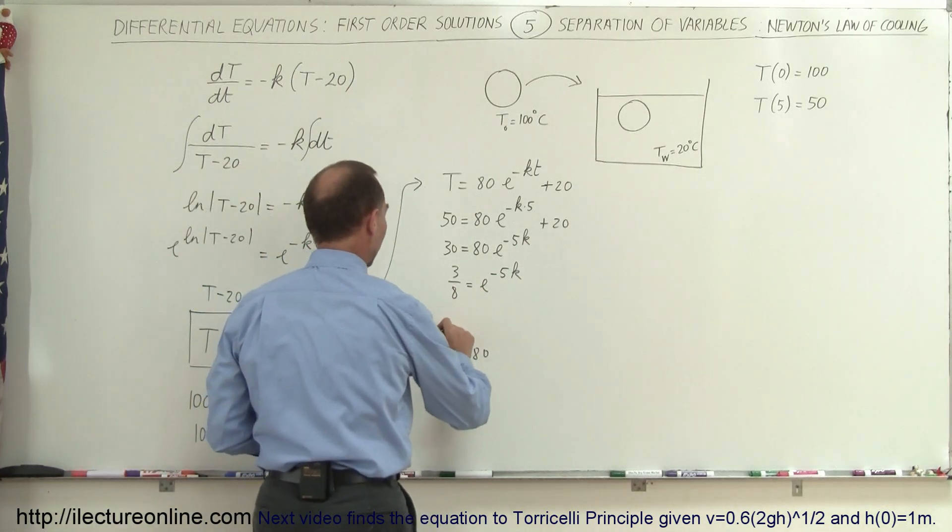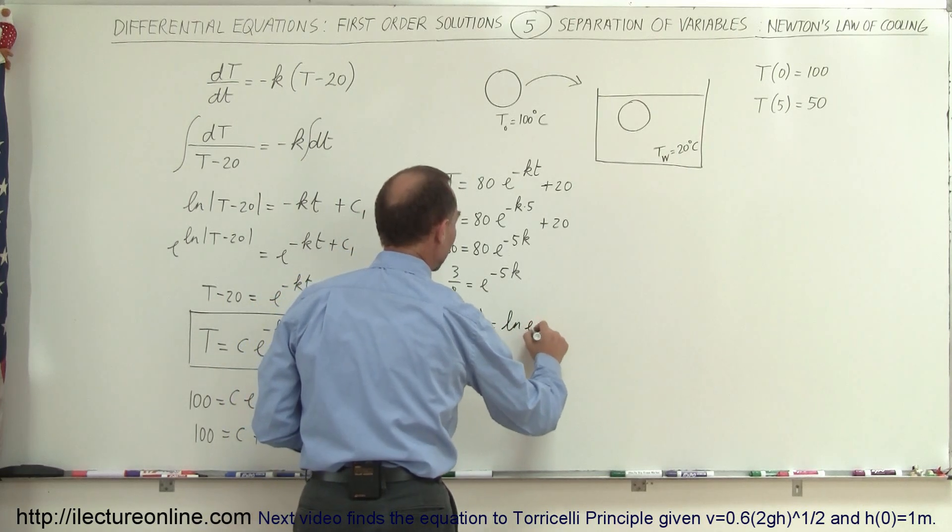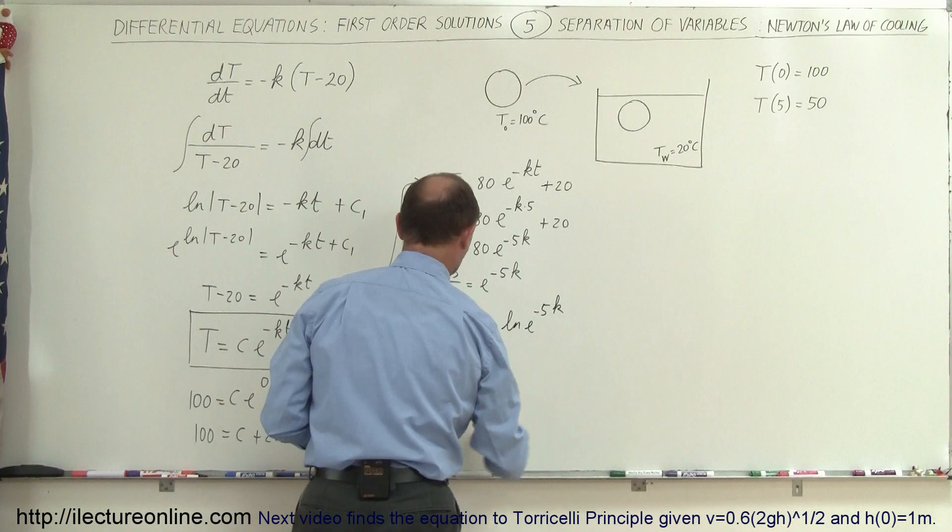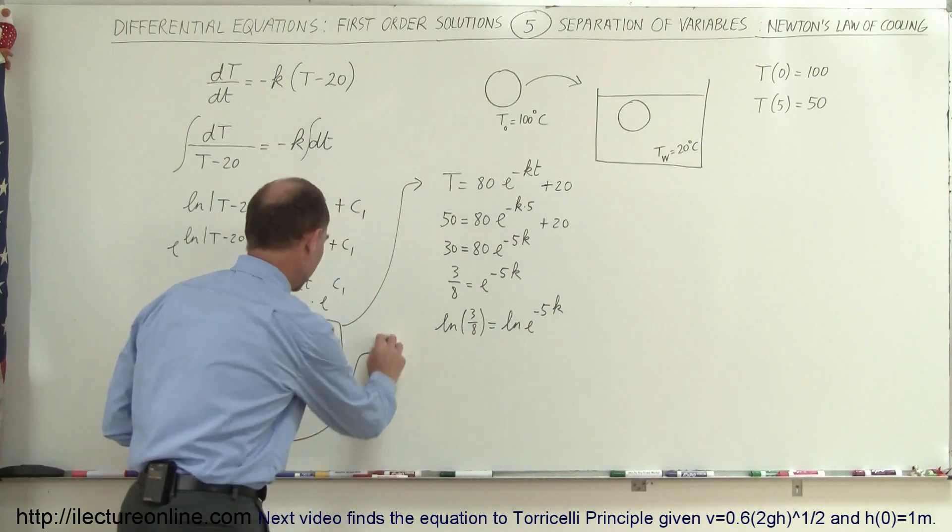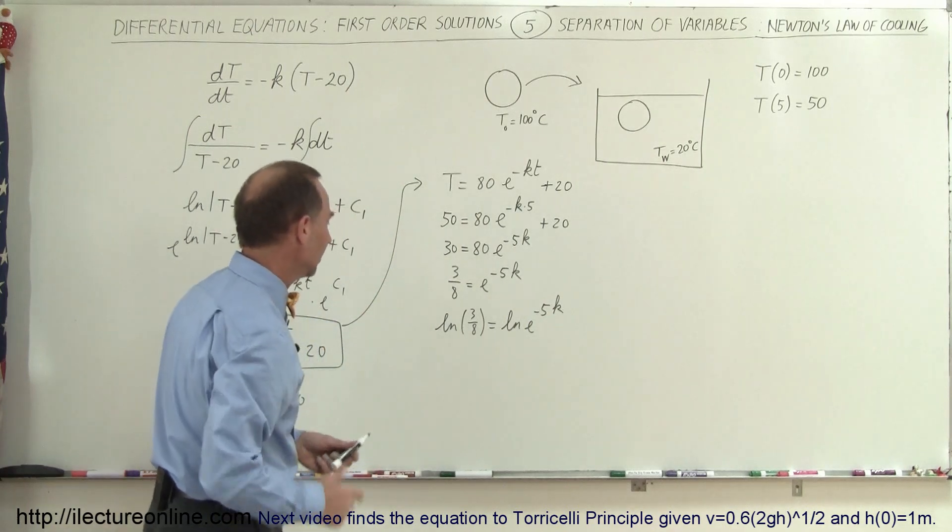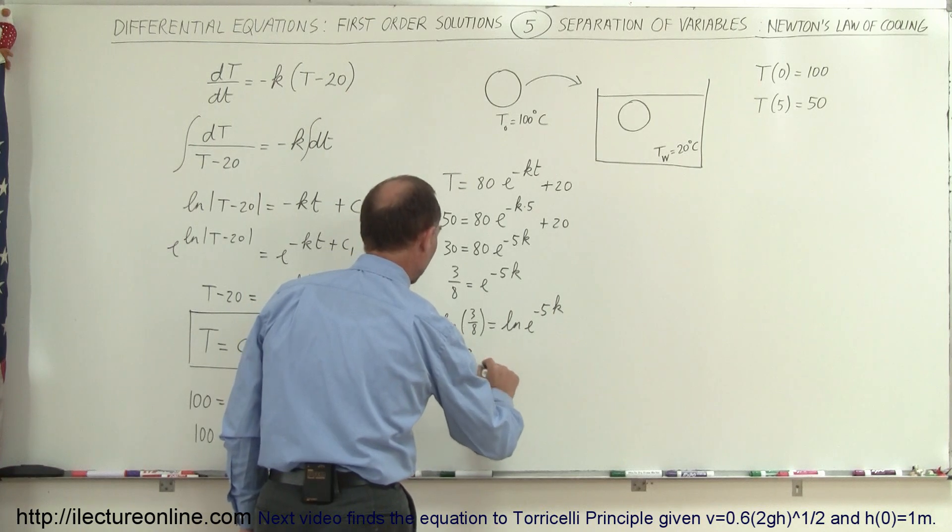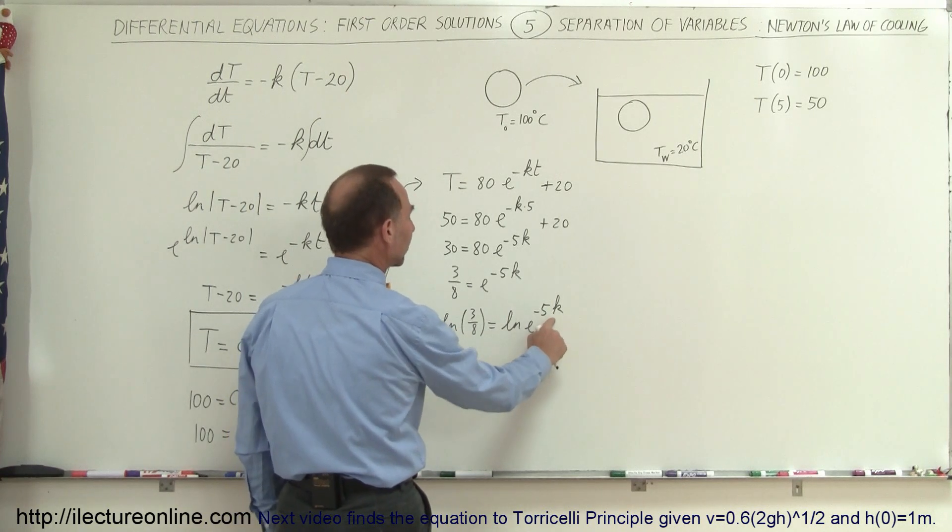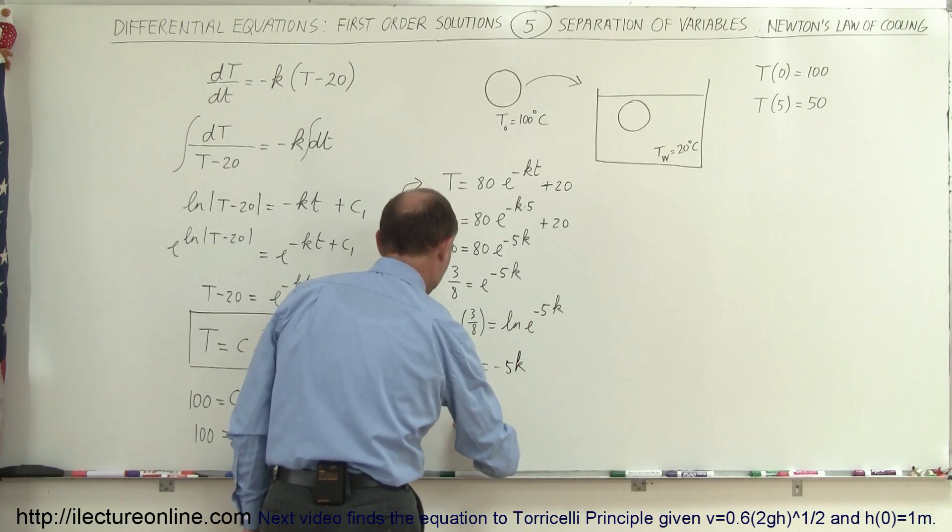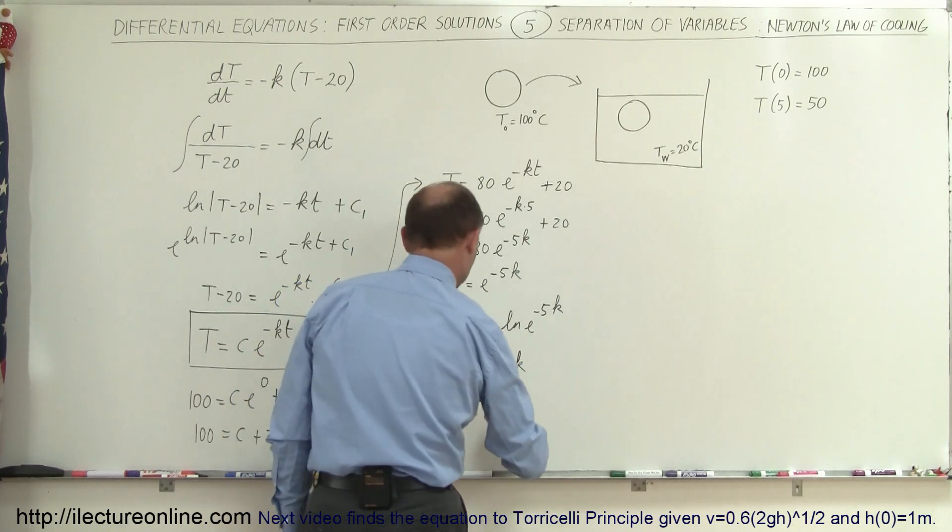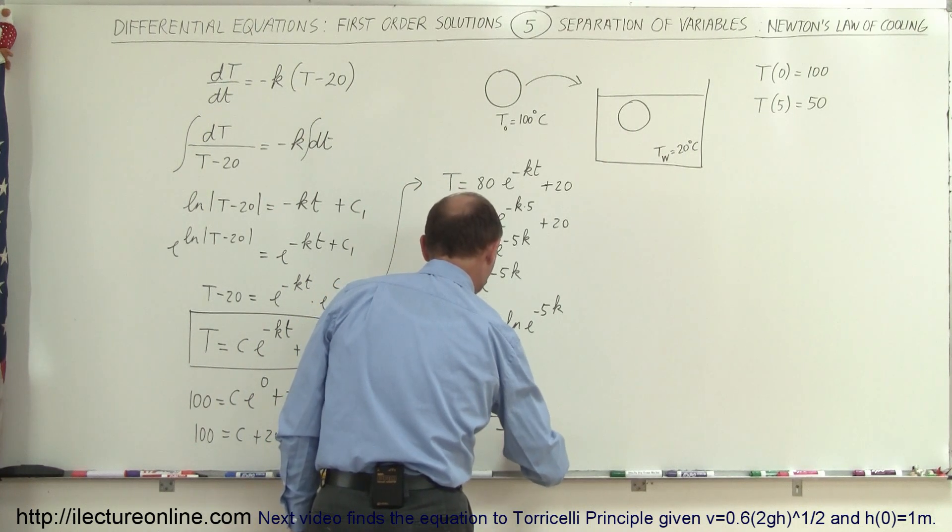Taking the natural log of both sides, I get the natural log of 3/8 equals the natural log of E to the minus 5K. The natural log of E to an exponent negates, so we get minus 5K. Finally, K equals the natural log of 3/8 divided by negative 5.